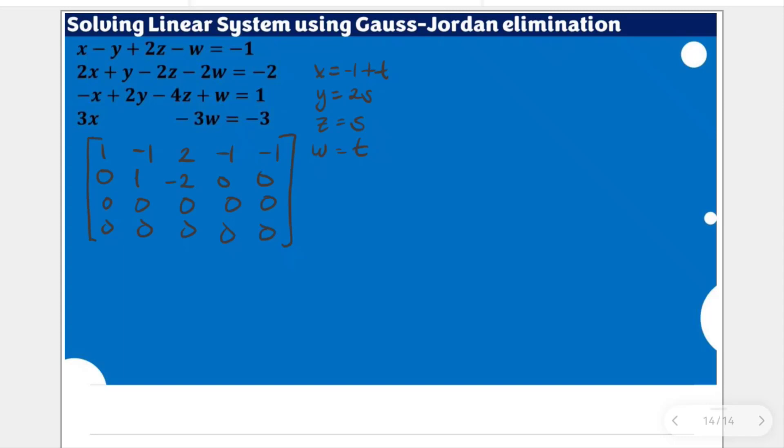By the way, this is a row echelon form. All zero rows were placed at the bottom portion, in that the entries below the leading ones are all zero. The additional condition for this to become a reduced row echelon form is that all entries on the same column having leading one, which is this, should all be zero. So we're going to make negative one as zero.